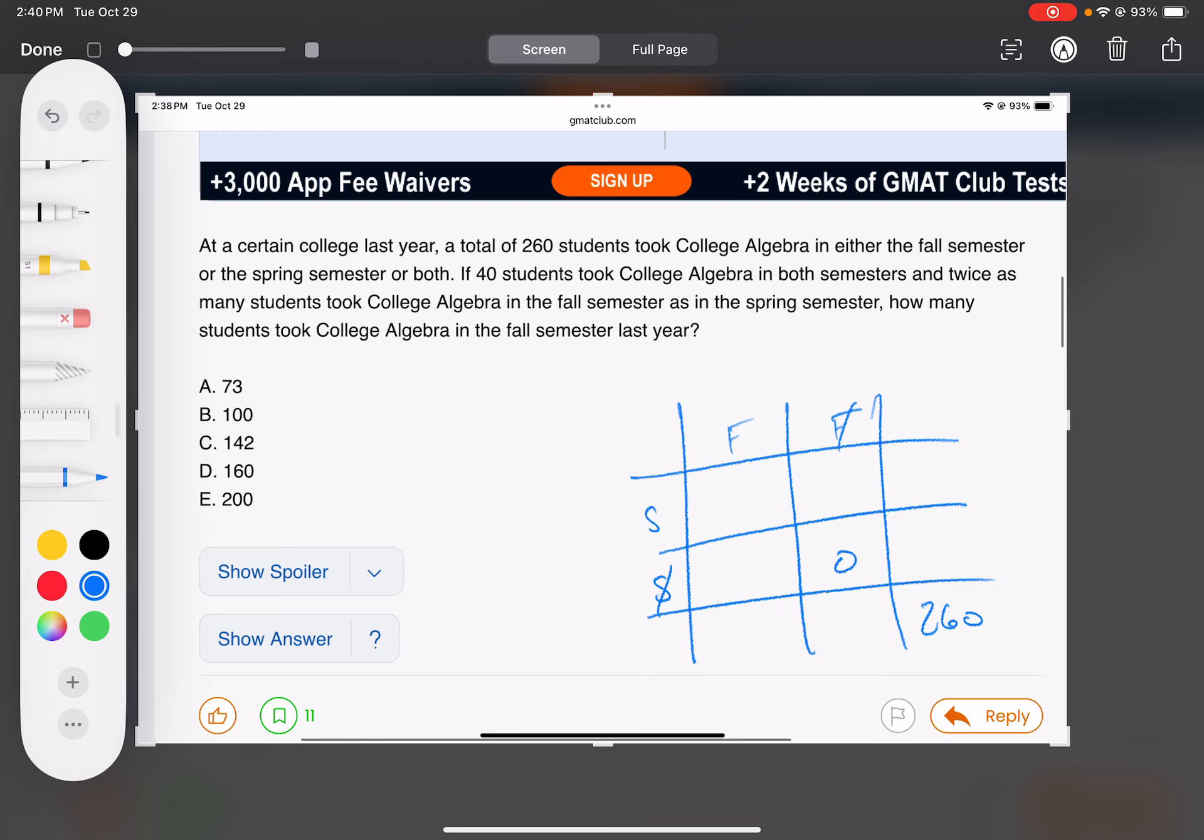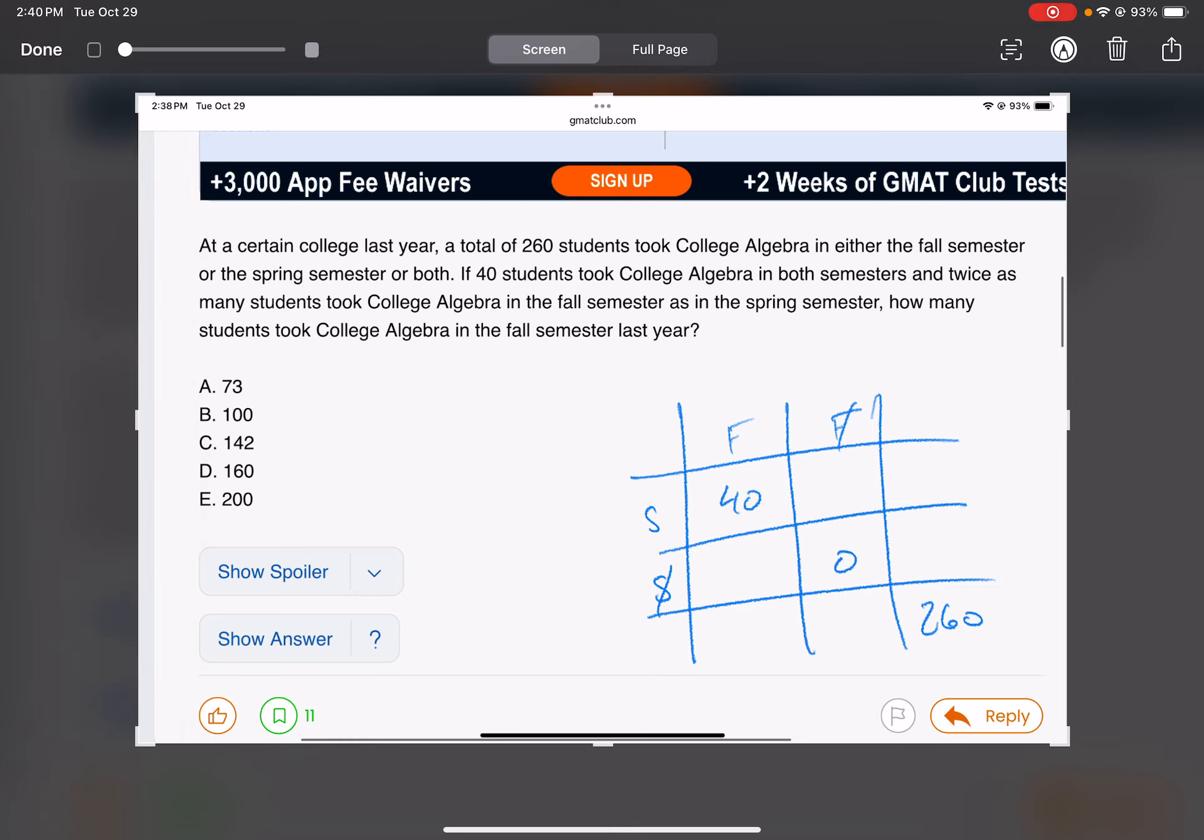40 students took it in both, and twice as many took it in the fall as the spring. So twice as many in the fall as the spring. So that means this is 2x, this is x.